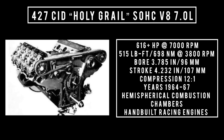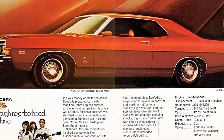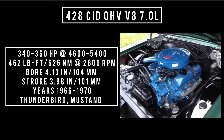As great and legendary as the 427 was, it proved very expensive to produce — even the slightest shift when casting the cores would make the block unusable. So Ford went back to the drawing board and came up with the 428 cubic inch displacement overhead valve V8. It produced anywhere between 340 to 360 horsepower at 4,600 to 5,400 RPM, up to 462 pound-feet or 626 newton meters at 2,800 RPM, with a bore of 4.13 inches and a stroke of 3.8 inches. Used between 1966 and 1970, found in the Thunderbird, Mustang, and Cougar.